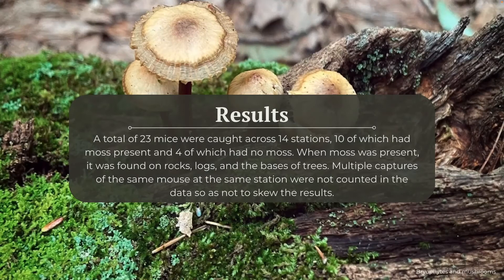A total of 23 mice were caught across 14 stations, 10 of which had moss present and four of which had no moss. When moss was present, it was found on rocks, logs, and the bases of trees. Multiple captures of the same mouse at the same station were not counted in the data so as not to skew the results.